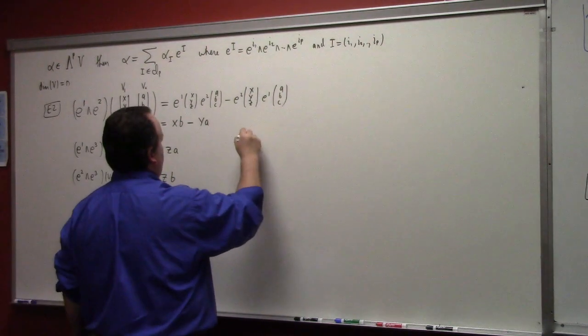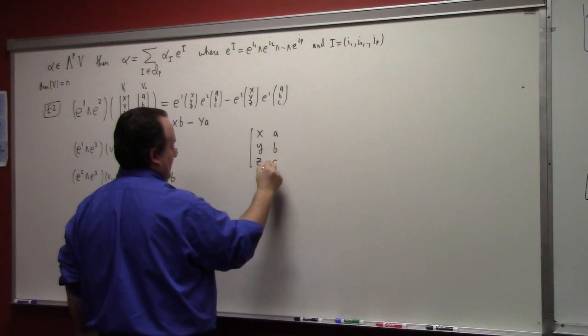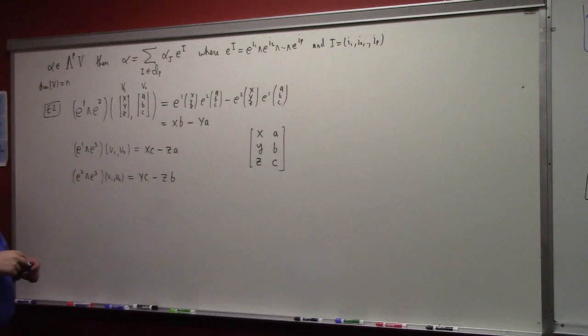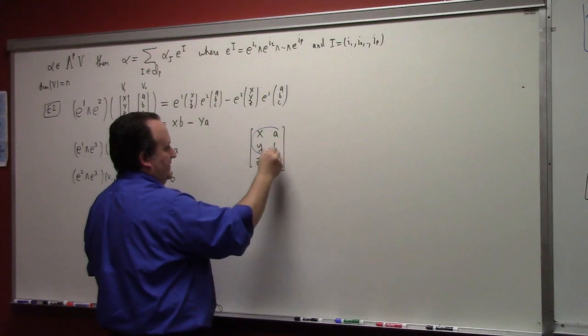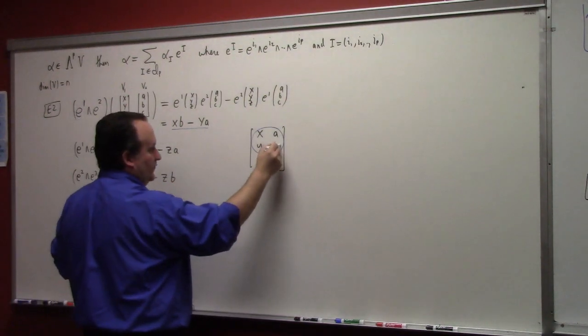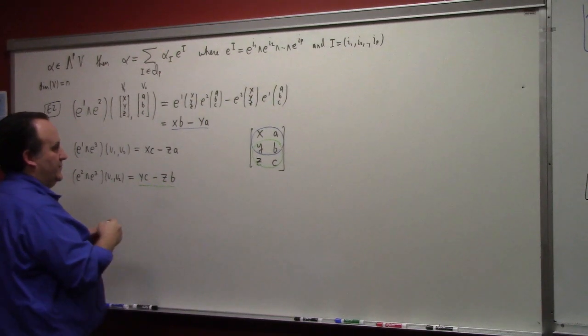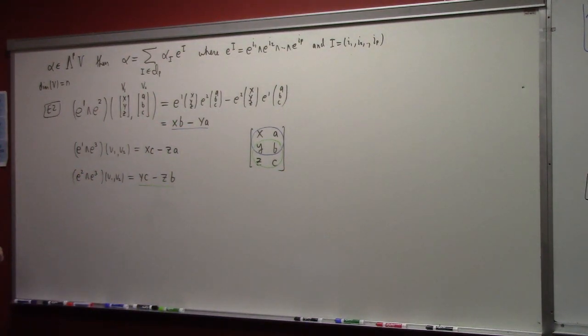Okay. So if you think about the matrix, right? X, A, Y, B, Z, C, right? What are these three quantities? What are the determinants? The determinants of the submatrices. That's that one. And yeah, this one is that one, right? And the middle one is these two. So they're the determinants of the submatrices.